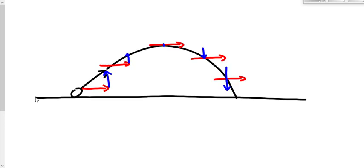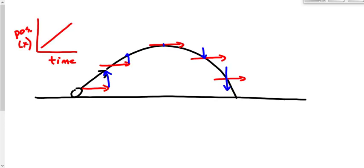If I were to plot a graph of horizontal position versus time, what would that look like? It's constant velocity, so it looks like a straight line — horizontal position versus time looks like this. What about a graph of vertical position versus time? The vertical position versus time would look like a parabola curve.